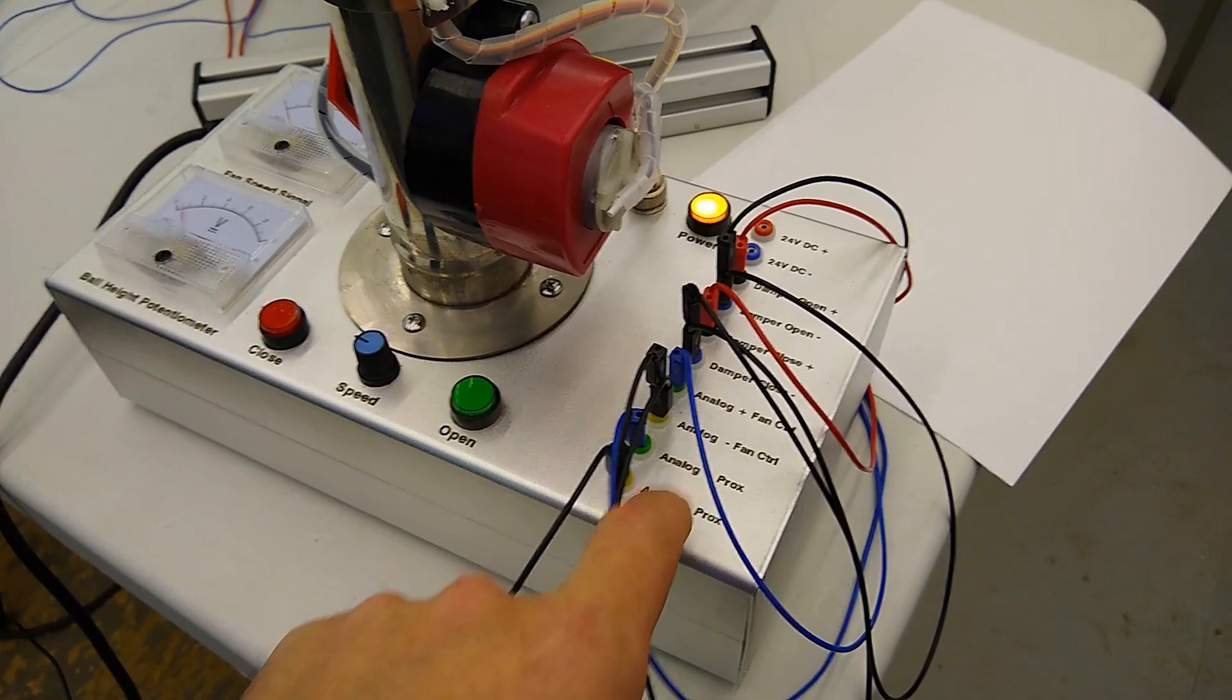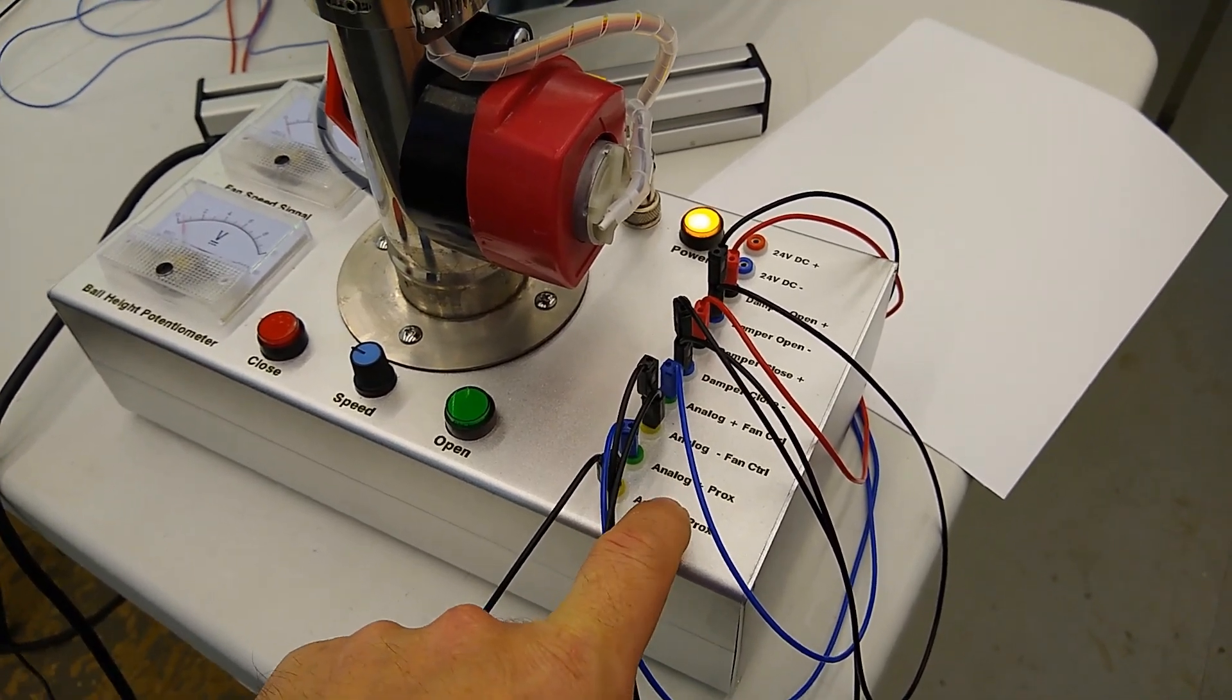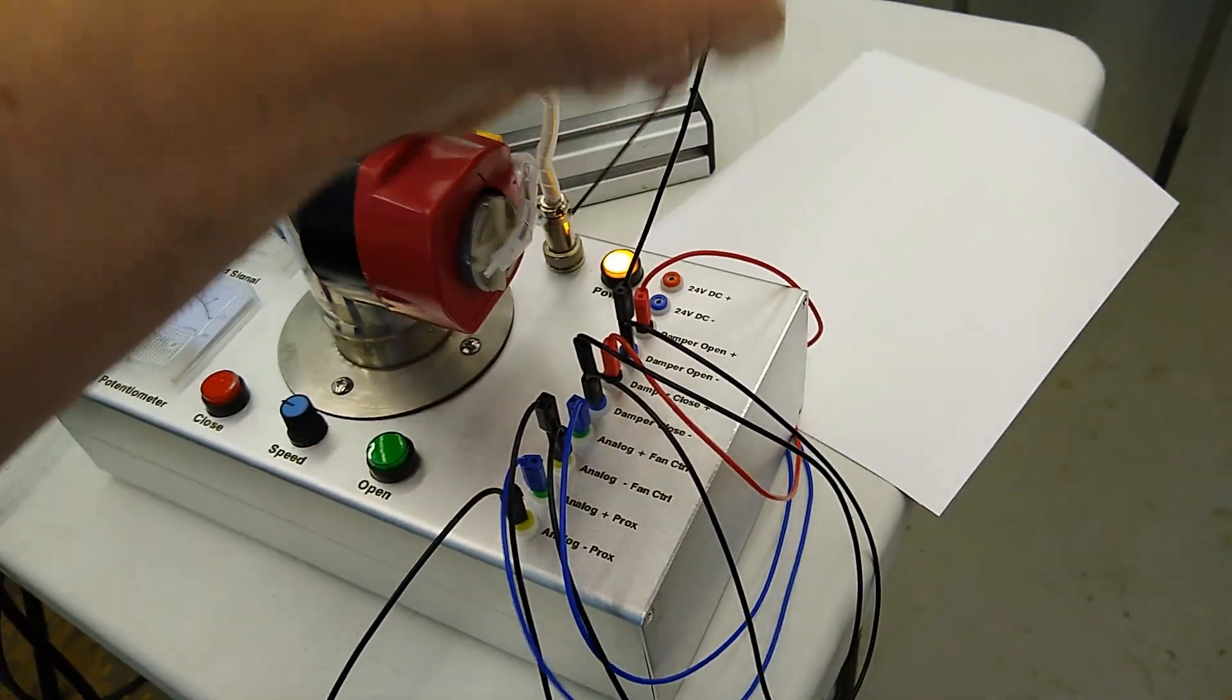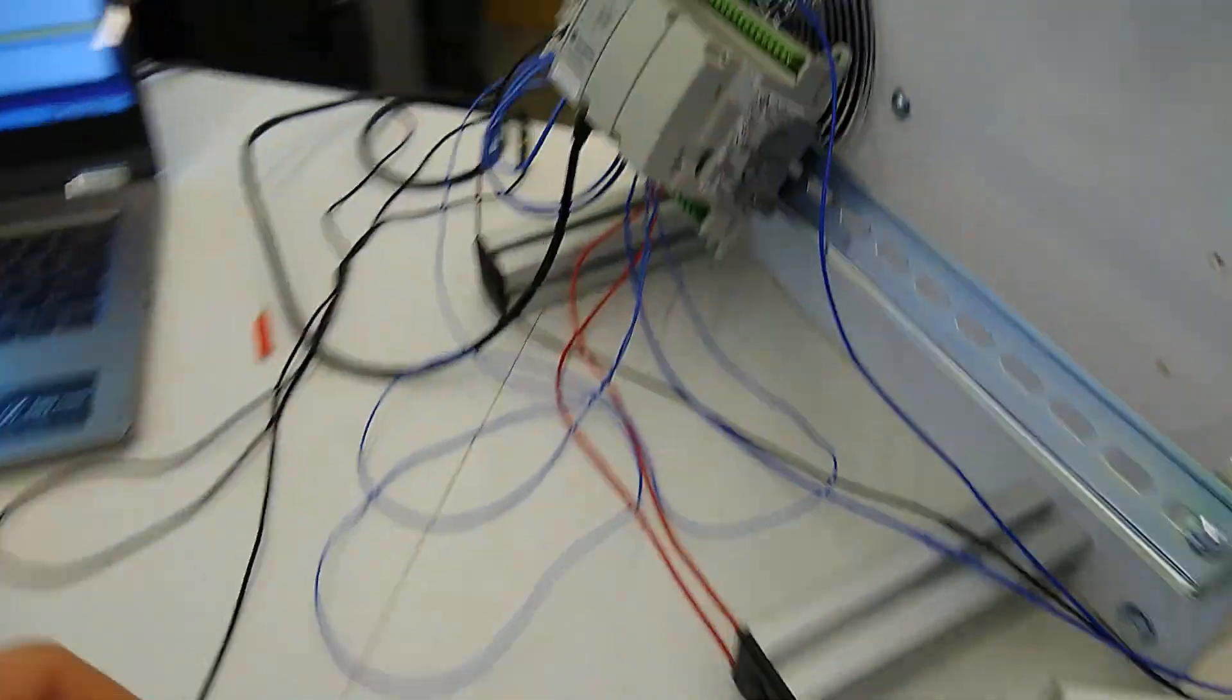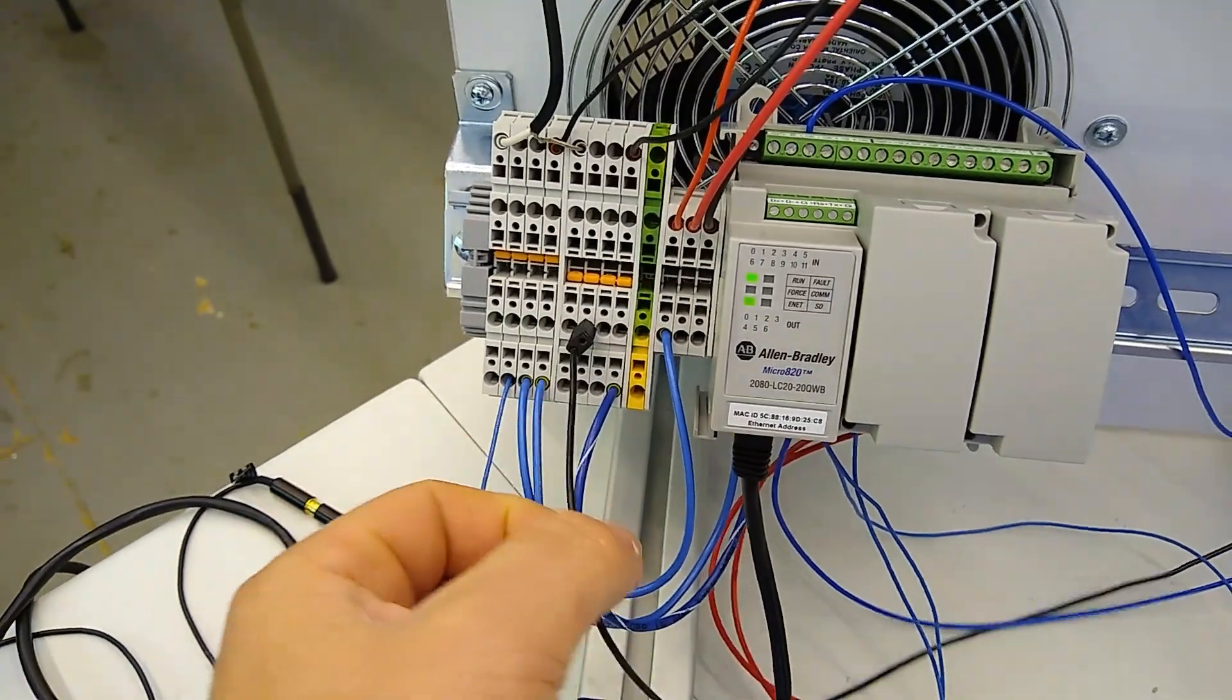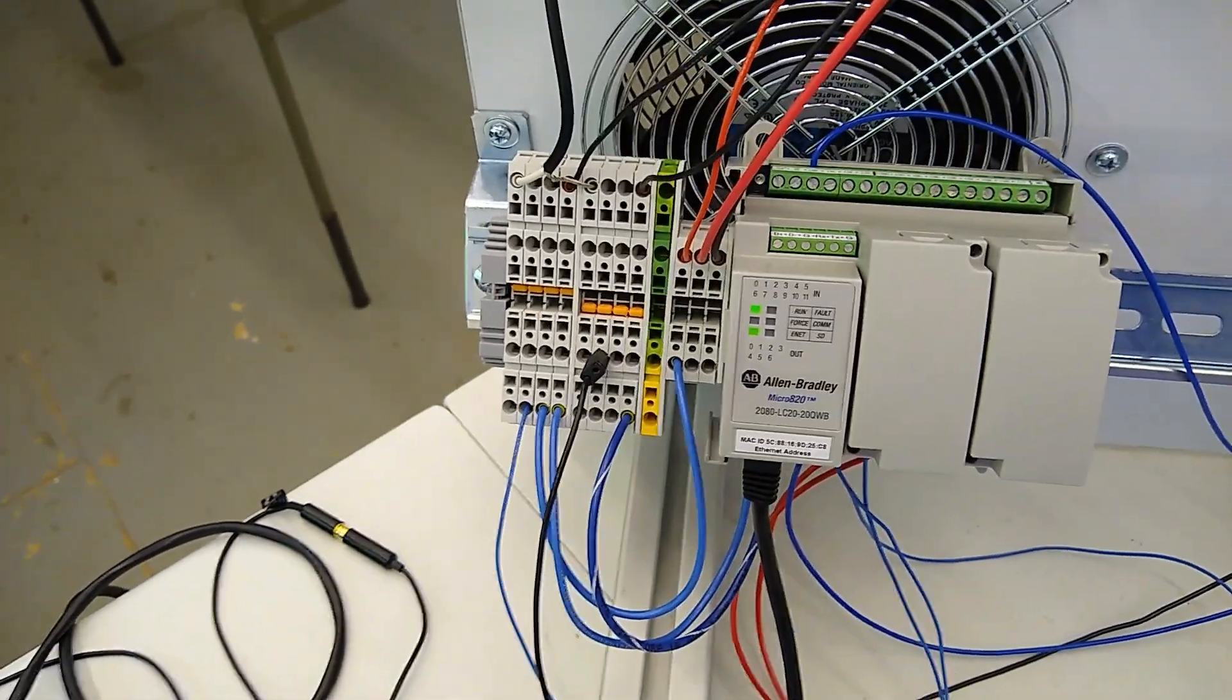So on each point you have a plus and a minus and we're going to jumper all of the minuses together and then it's going to go along to our right set of terminal blocks which is the zero volt of our 24 volt power supply.